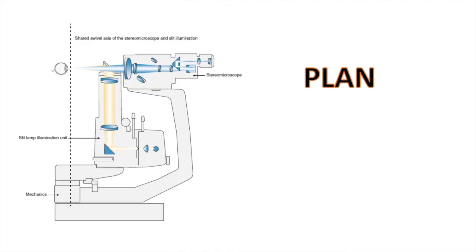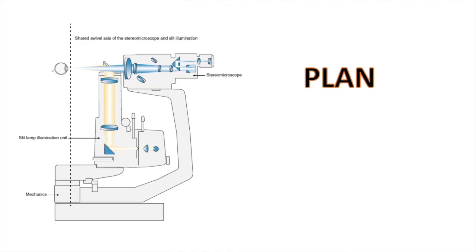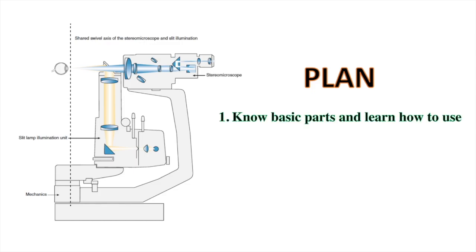The plan will be to know about the basic parts of a slit lamp and learn how to use them. The three basic parts are the illumination system, the observation system, and the coaxial mechanics, along with a little physics related to that for theoretical purposes.